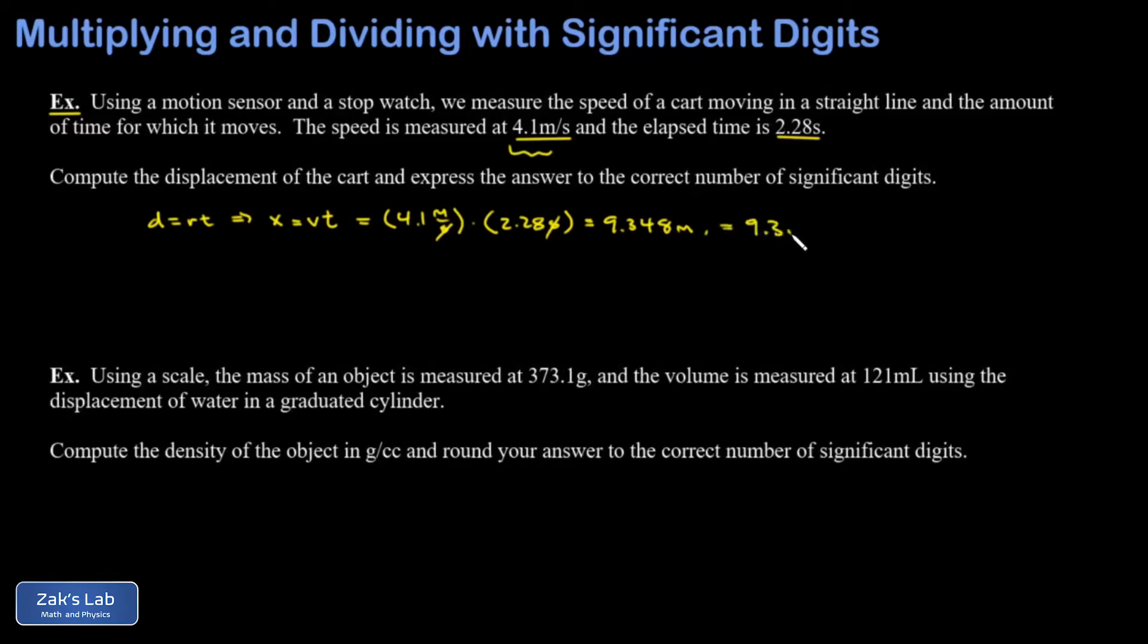In the second example we're told that we've used a scale to measure the mass of an object at 373.1 grams and the volume was measured at 121 milliliters using the displacement of water in a graduated cylinder. We're asked to find the density of this object in grams per cubic centimeter.